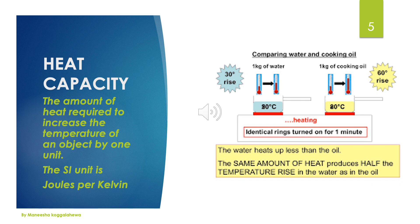The cooking oil heats up higher than the water. What is the conclusion? The heat capacity of cooking oil is higher than the heat capacity of water. So we can build up the definition of heat capacity like this: the amount of heat required to increase the temperature of an object by 1 unit. The SI unit of heat capacity is joules per Kelvin.